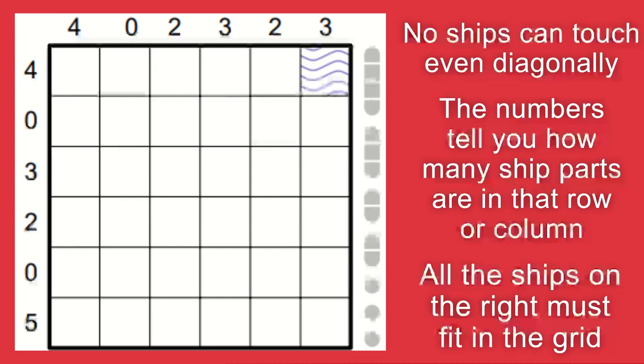The ships also can't be placed diagonally, and the numbers that you see above and to the left will tell you how many ship parts are in that row or column. All of those ships will need to go onto the grid following the instructions that you see on the screen.